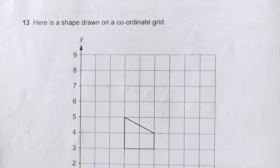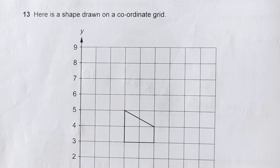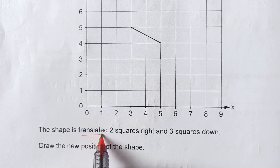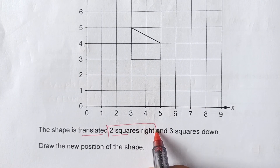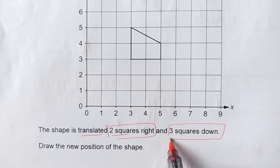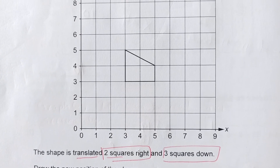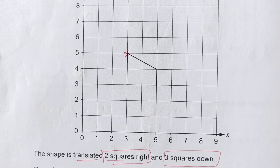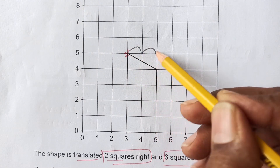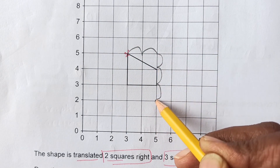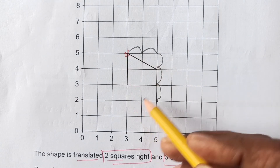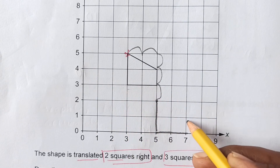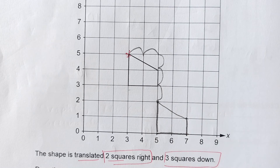Number 13: a shape is drawn on a coordinate grid. The shape is translated two squares right and three squares down. Taking one corner: move two squares right, then three squares down to find its new position. Applying the same translation to all corners gives the final translated shape.